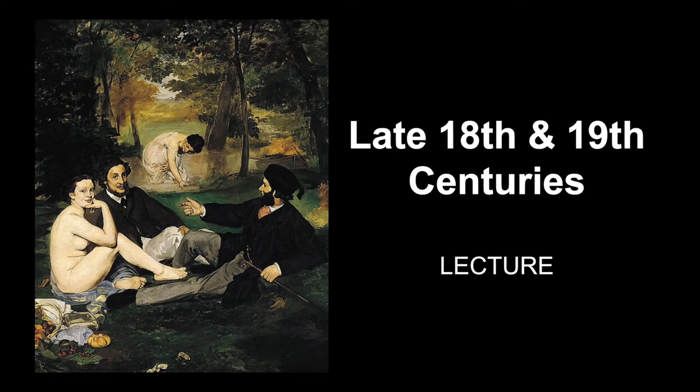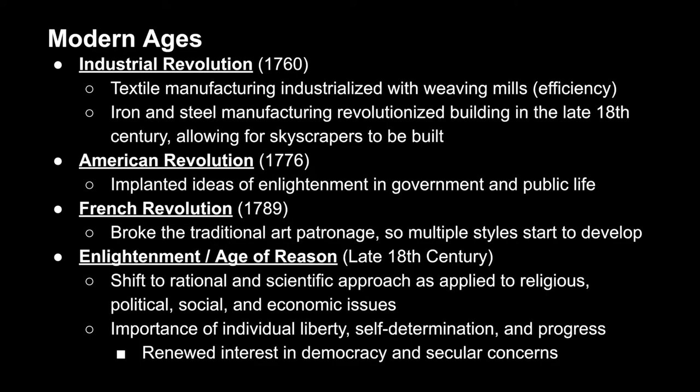In this video we're going to cover the late 18th and 19th centuries. To contextualize this lecture, we're going to start with the Industrial Revolution in 1760, when products like textiles, iron, and steel became industrialized — meaning they were able to be produced on a mass scale very efficiently.